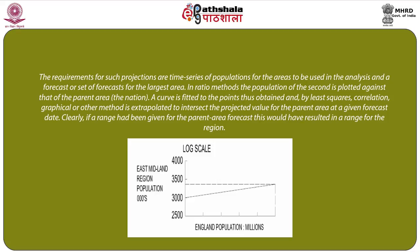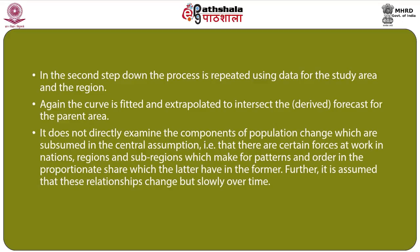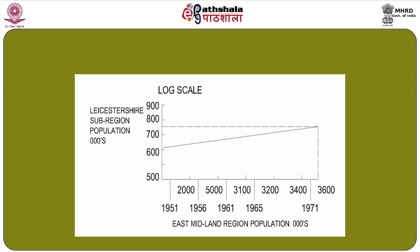As depicted in the log scale graph, the y-axis refers to the East Midlands region population in thousands against the England population in millions over time. In the second step, the process is repeated using data for the study area and the region — the curve is again fitted and extrapolated to intersect the derived forecast for the parent area. This method does not directly examine the components of population change; instead, it assumes certain forces at work in nations, regions, and sub-regions create patterns in proportionate shares. These relationships are assumed to change only slowly over time, as shown in the graph depicting population from 1951 to 1961 across various sub-regions.